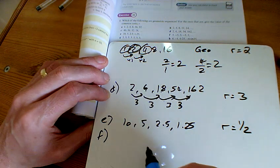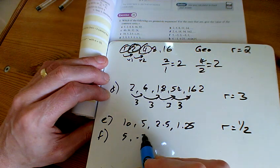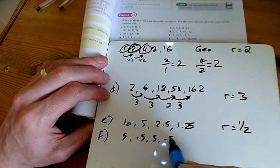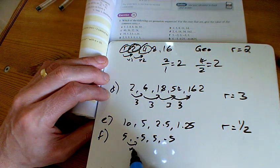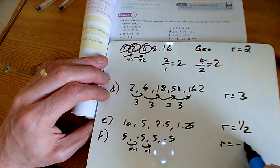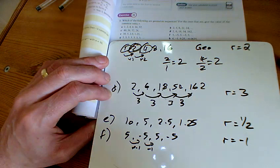So F is quite a weird one. It oscillates. It goes from 5 to minus 5 to 5 to minus 5. Each time here, you're timesing by minus 1. So R here is minus 1.